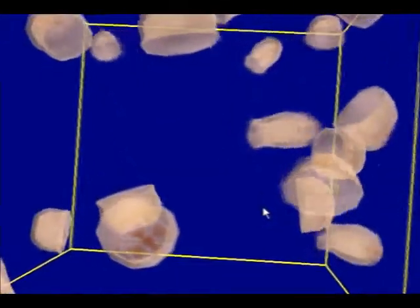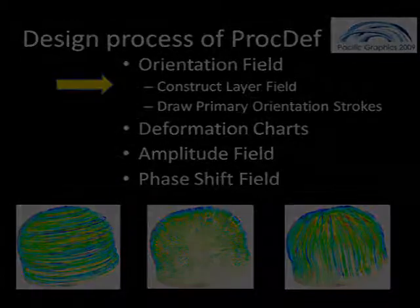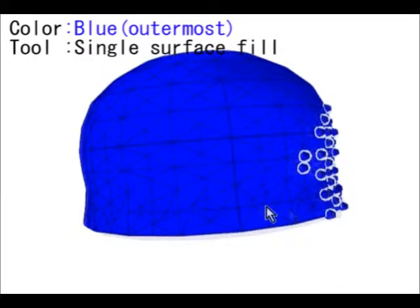We show the design process of our framework. The user first constructs an orientation field by specifying smooth layer field and primary directions. The user selects a color and paints on the model with three tools.